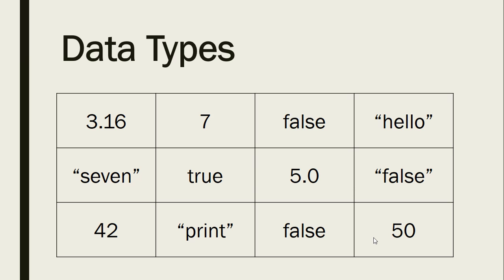42. If you said integer, you're correct. Print. That's right. A string. If you said string. False. Yep. This time it's a Boolean. And then 50. That's right. If you said integer, great job.